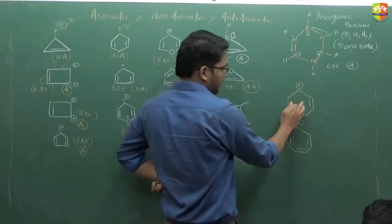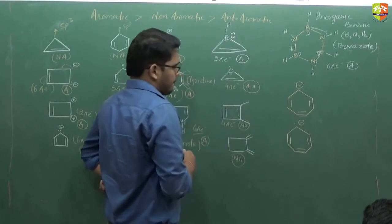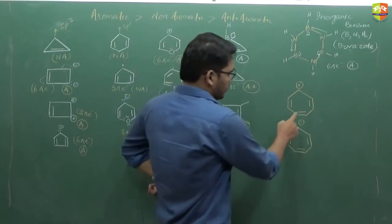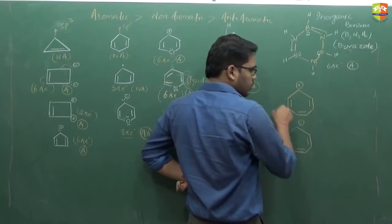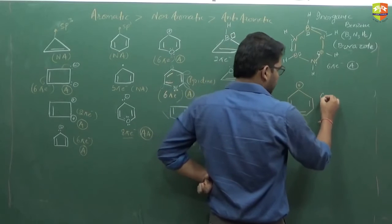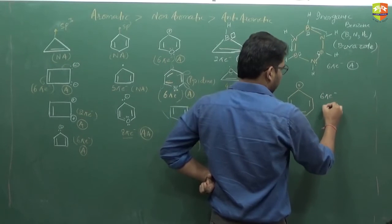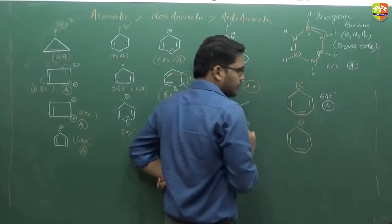What about this polycyclic? 2, 4, 6 and it is in conjugation, so it is 6 pi electrons — aromatic.